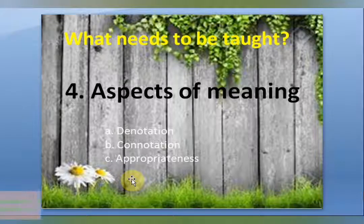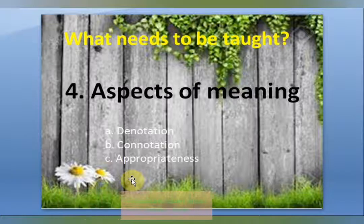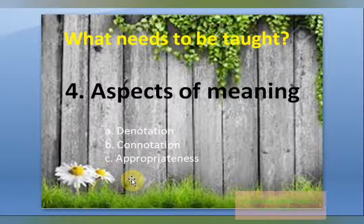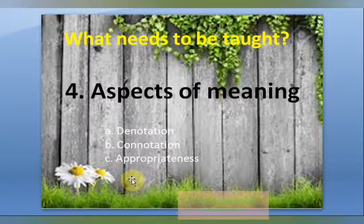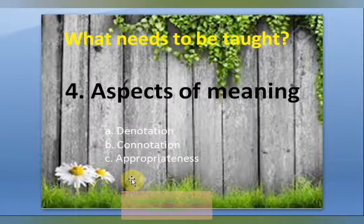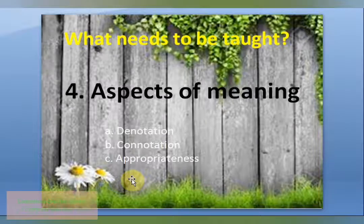A less obvious component of a word's meaning is its connotation — the associations, positive or negative feelings evoked by the word. For instance, the word 'dog' as understood by most British people has positive connotations of loyalty and friendship. However, the Arabic equivalent of dog is understood by most Arabs as having negative associations of dirt and disloyalty. So you see positive as well as negative connotations in two different cultures.